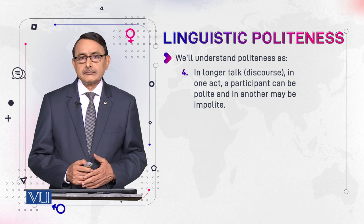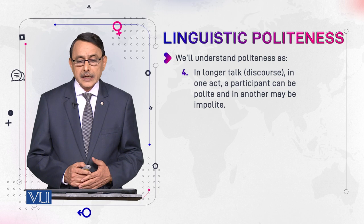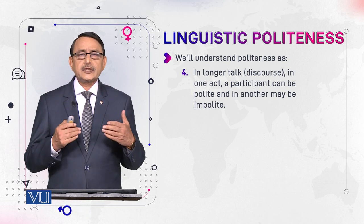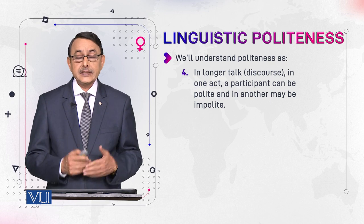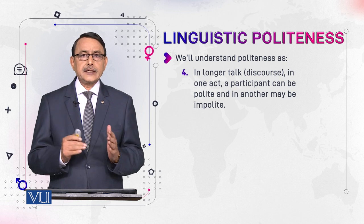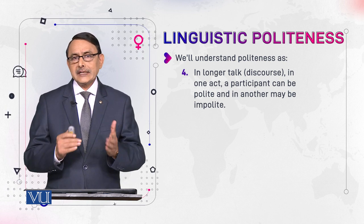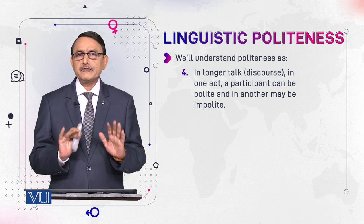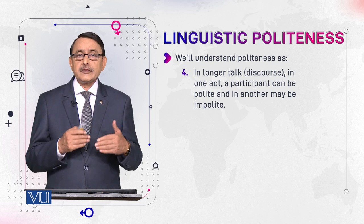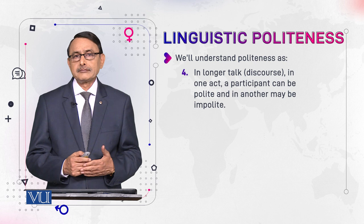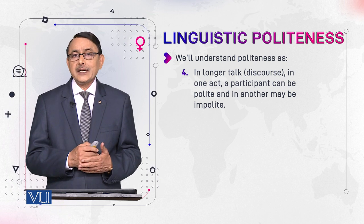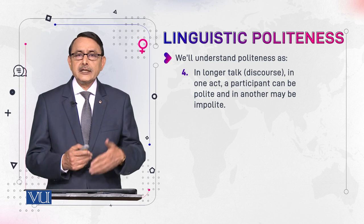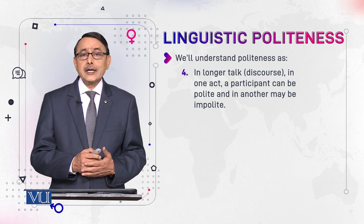Number four is the fourth feature of politeness. In longer talk — which we have been calling discourse, long stretches of talk stretched over more than one exchange — a participant can be polite in some acts and impolite in others. During longer talk you perform more than one speech act; in a single utterance you perform one speech act, but when there are multiple utterances there will be multiple speech acts, and it is not the case that all of them will be performed politely. This is a case that was not discussed in earlier modules.